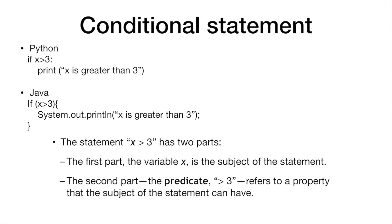As you can see, the statement x greater than 3 has two parts. The first part is the variable x — it is the subject of the statement. The second part we are going to call a predicate, which is 'greater than 3'. This refers to a property of the subject of the statement, and this property can be true or false. Using this type of statement, we will be able to find out whether the statement is true or false.